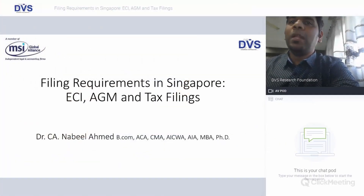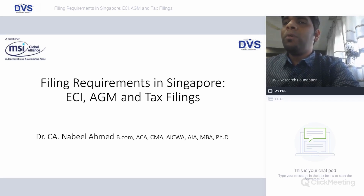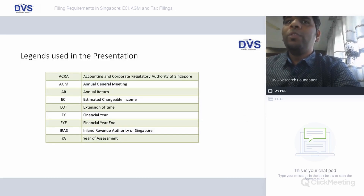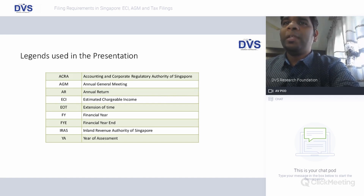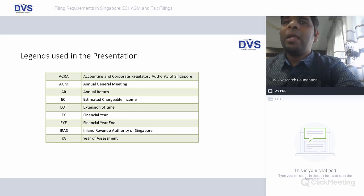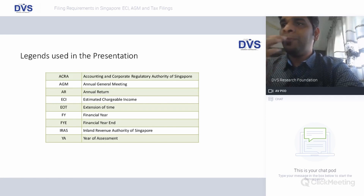Good morning to one and all. This is Dr. and today's topic is on filing requirements in Singapore regarding the estimated chargeable income, the AGM requirements, and taxation filings for companies. Going through certain legends importantly used in our presentation: ACRA is the Accounting and Corporate Regulatory Authority of Singapore, AGM is Annual General Meeting, AR is Annual Return, ECI is Estimated Chargeable Income, EOT is Extension of Time, FYS is Financial Year, FYE is Financial Year End, IRAS is Inland Revenue Authority of Singapore, and YA is Year of Assessment.